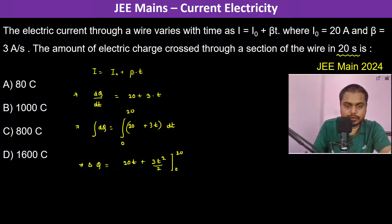Which is 20 into 20 minus 0, plus 3 by 2 into 20 into 20 minus 0.